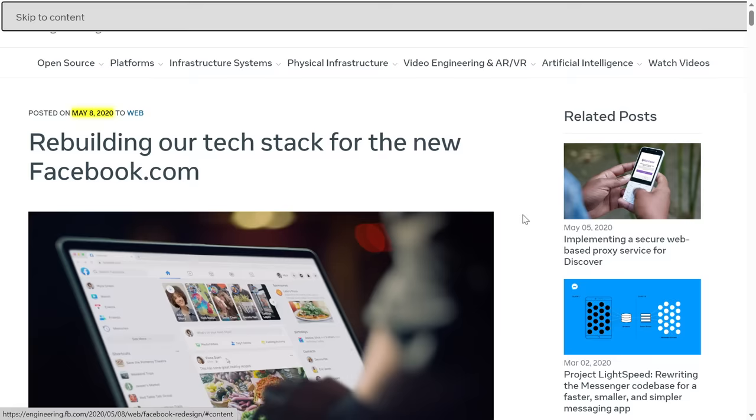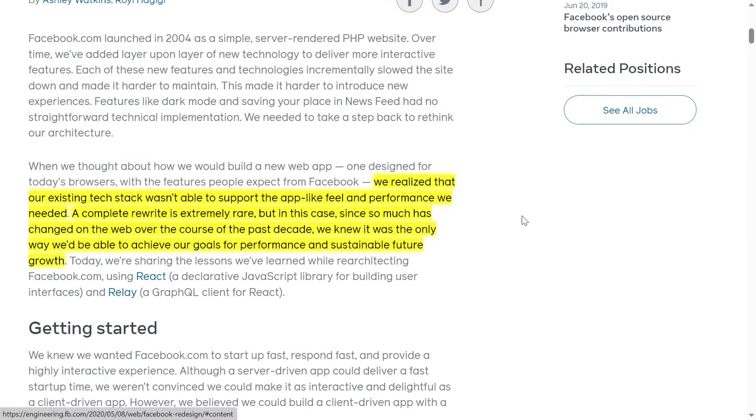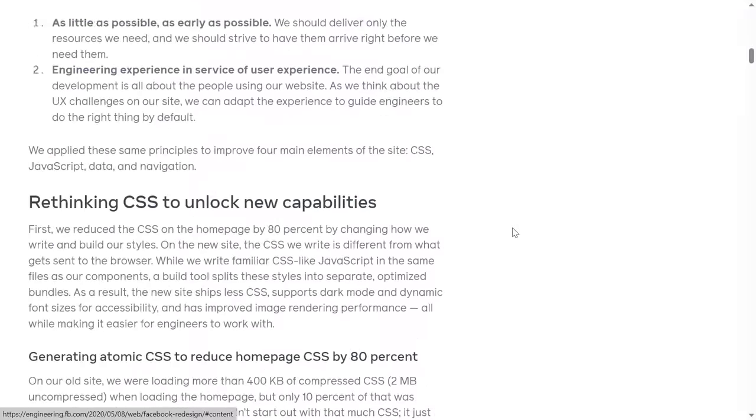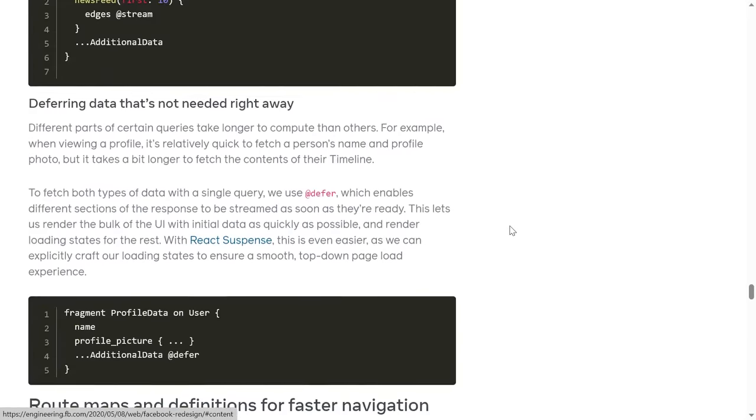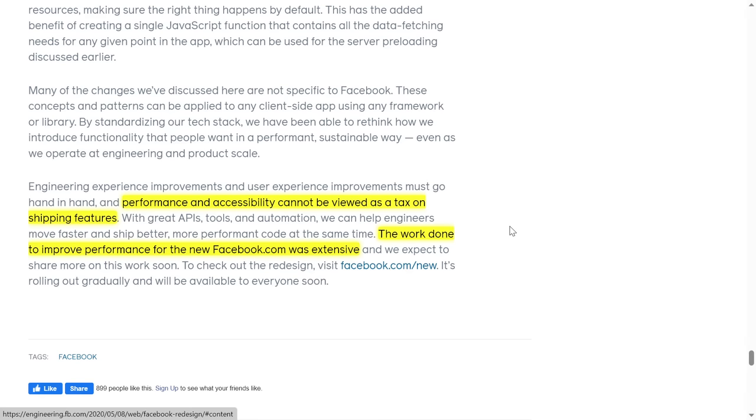Just two months later, Facebook announced it was rebuilding the entire tech stack for Facebook.com. Why were they doing this? Because they realized that their existing tech stack wasn't able to support the, quote, app-like feel and performance that they needed. How extensive was the work necessary to rebuild Facebook.com? According to Facebook, it required, quote, a complete rewrite. Strangely, in this post, Facebook claims that rewrites are extremely rare. Which is a bizarre thing for them to say, considering the fact that, as we've seen, they've already done numerous complete rewrites on other parts of their technology stack. But, regardless, this particular rewrite touched a huge cross-section of their technology stack, and they concluded by saying that the work done to improve performance was, quote, extensive, and that, quote, performance and accessibility can't be viewed as a tax on shipping features.